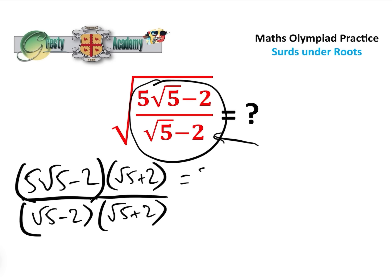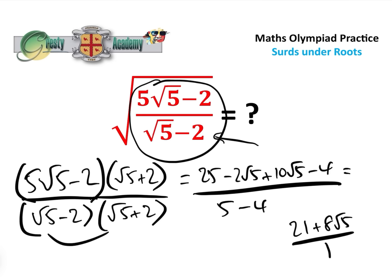Okay, so 5√5 times √5, that is 25 minus 2√5—I'm just expanding the top brackets here—add 10√5 minus 4, over √5 times √5 is 5 minus 2√5 add plus 2√5 minus 4 equals 1. So that gives us 21 add 8√5 over 1.